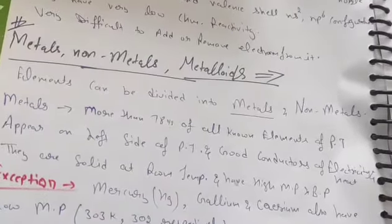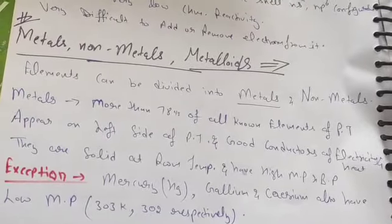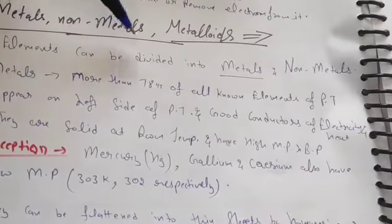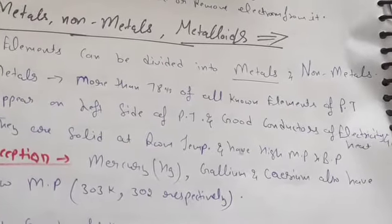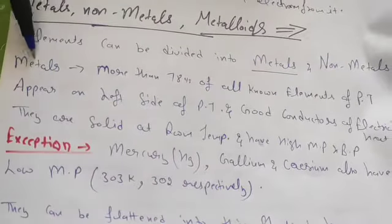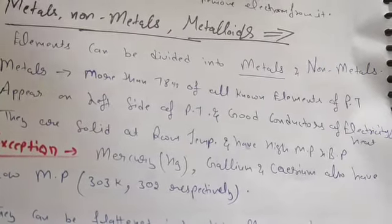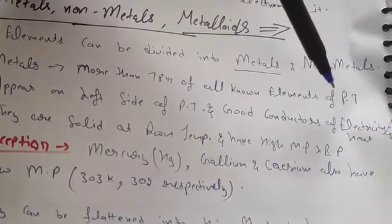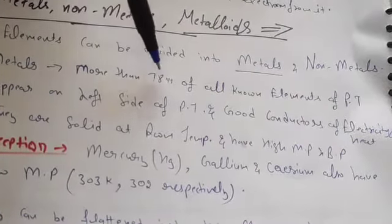Now our new topic is metals, non-metals, and metalloids. Elements can be divided into metals and non-metals. What are metals? More than 78% of all elements in the periodic table are metals.